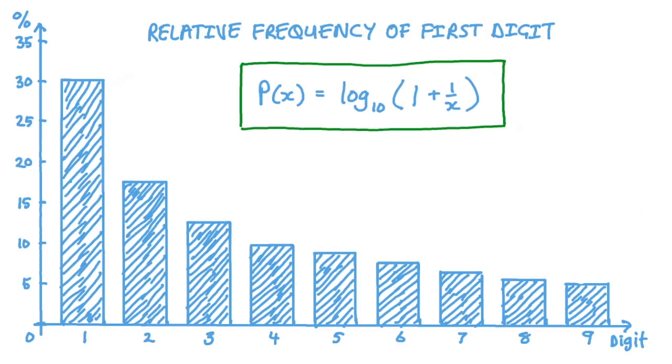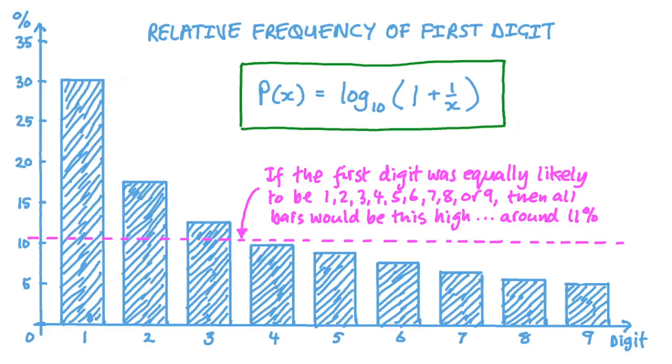Now, we've talked about logarithms to explain how Newcomb first discovered this effect, but the formula for working out the expected probability of each possible first digit actually involves logarithms as well. The probability that the first digit is x is equal to log base 10 of 1 plus 1 over x.